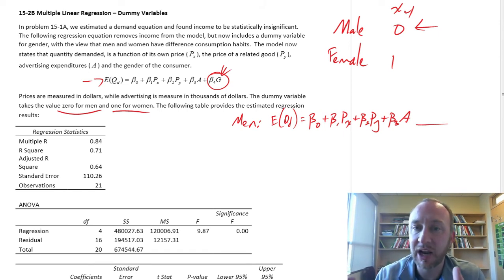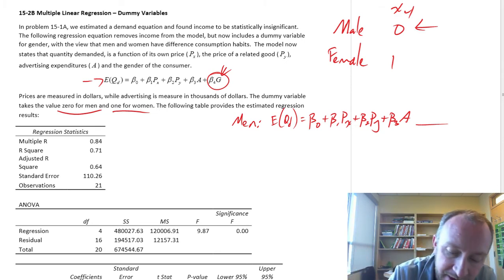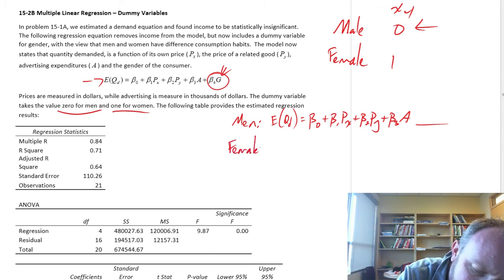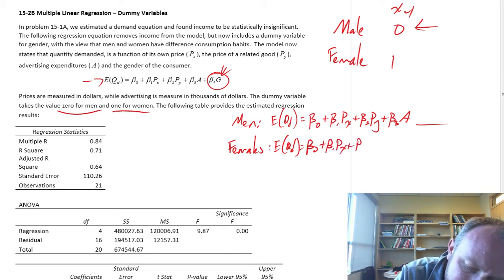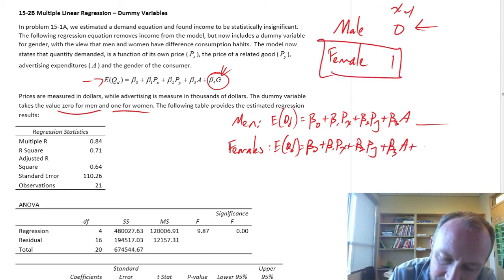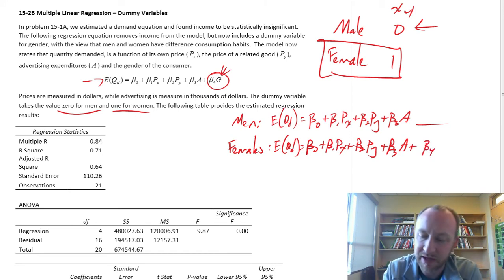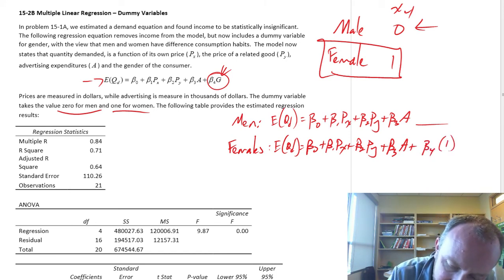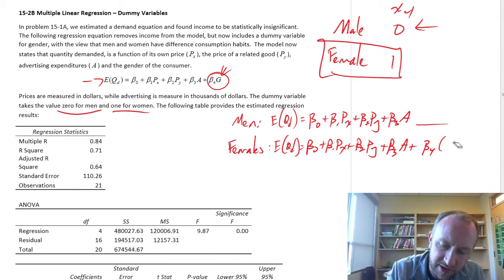This describes the relationship between a product's own price, price of a related good, and advertising expenditures on quantity demanded, specifically for men. And then for women, same thing. Expected value of quantity demanded: beta 0, beta 1 of its own price, beta 2 price of related good, beta 3 advertising. But now that dummy variable has a value of 1, so now I can add beta 4 in.